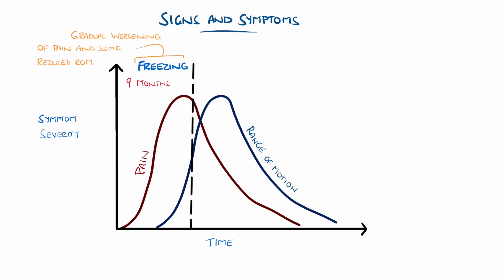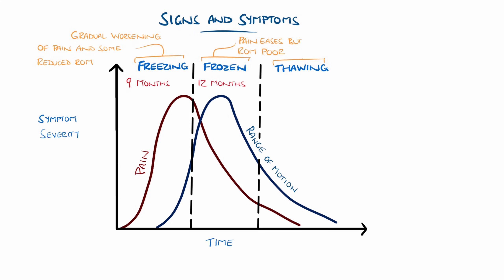In stage 2, or the frozen stage, the pain begins to ease and may be more limited to the extremities of motion; however, the range of motion is extremely limited. This stage lasts around 12 months. Stage 3, or the thawing stage, features a slow improvement in the range of motion and any remaining pain. This stage can last several years.